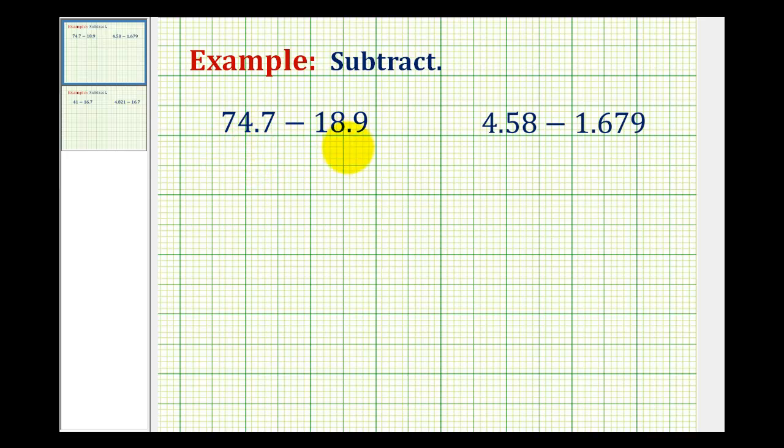In order to subtract decimals, we want to rewrite the problem vertically, lining up the corresponding place values as well as the decimal point. So we'll rewrite this problem as 74.7 minus 18.9.